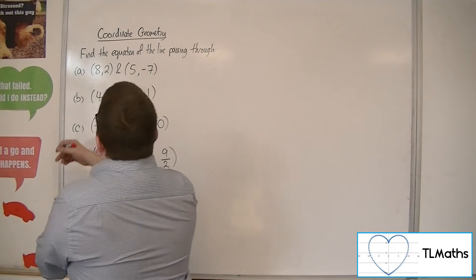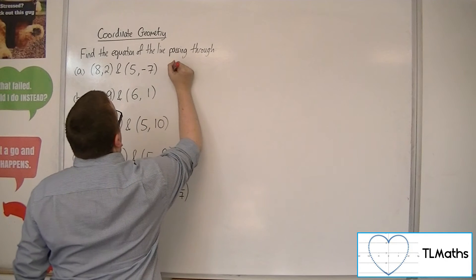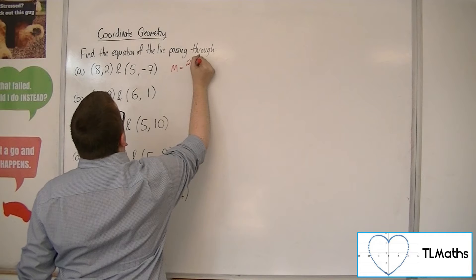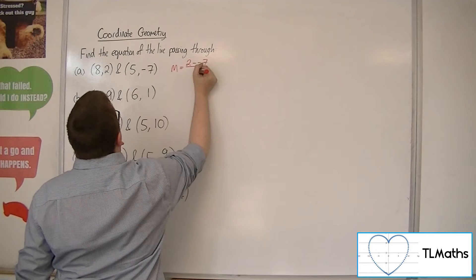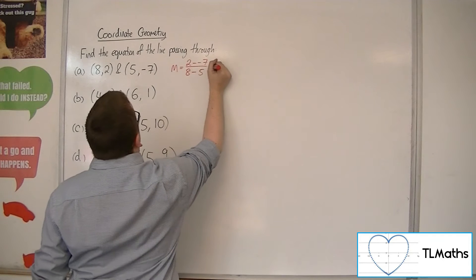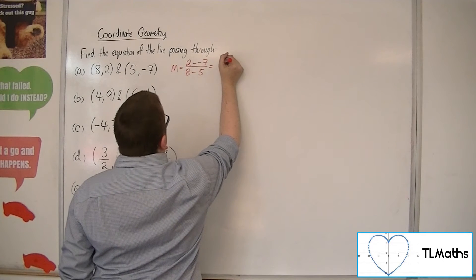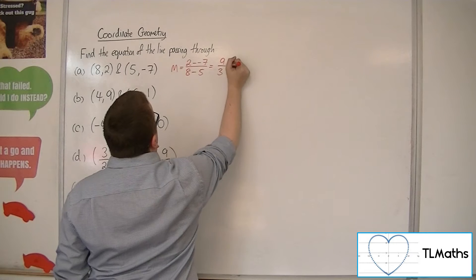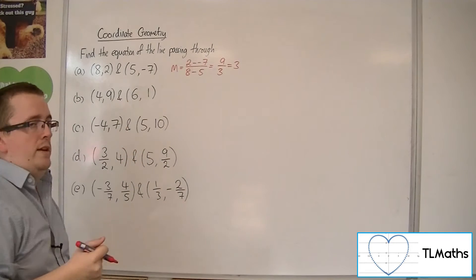So we've got to first find the gradient of the line. So m is equal to the difference in the y-coordinates, so 2 take away minus 7, over the difference in the x-coordinates, so 8 take away 5. So we're going to have 9 in the numerator and 3 in the denominator, so 9 divided by 3 is 3.